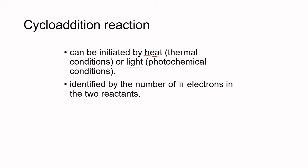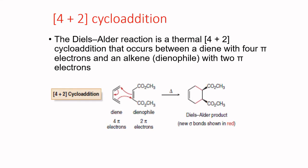Cycloaddition reactions are also identified by the number of pi electrons in the two reactants. There are two types of cycloaddition. The first is 4+2 cycloaddition. The Diels-Alder reaction is a thermal 4+2 addition that occurs between a diene with 4 pi electrons and an alkene (dienophile) with 2 pi electrons — that's why it is called 4+2.